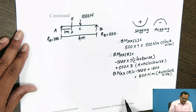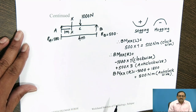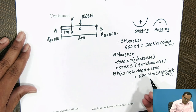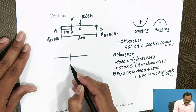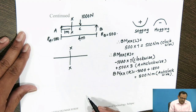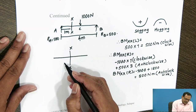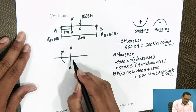Therefore, bending moment at section XX is the algebraic sum of the moments due to the reactions and forces acting to the left side or to the right side of the section. If we consider the bending moment at section XX, the bending moment to the left side of the section acts in the clockwise direction and to the right side the moment acts in the anticlockwise direction.